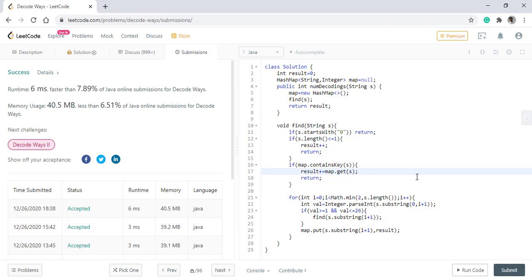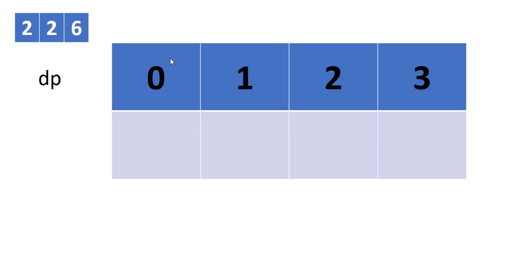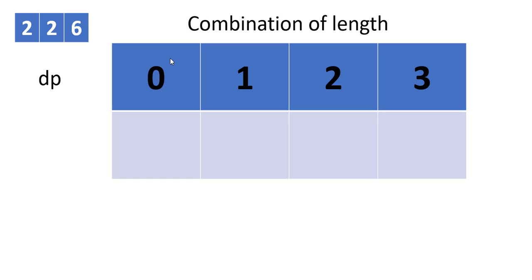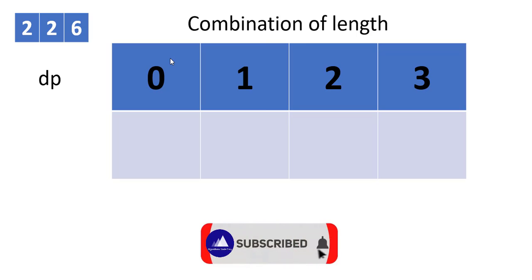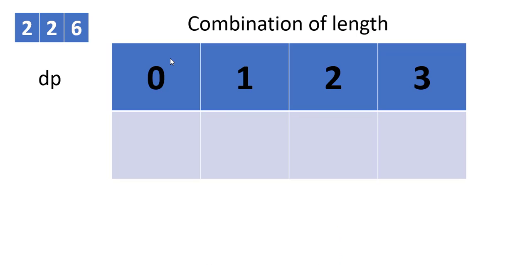We can do the same thing using dynamic programming with the same logic. Let's see how we use dynamic programming in this scenario. Suppose the same input 226 is given. We need a dp array of length plus 1, that is 4. dp[i] represents the number of ways we can decode the string of length i — so dp[0] for length 0, dp[1] for length 1, dp[2] for length 2, dp[3] for length 3. The answer lies in dp[3] because the length of our string is 3.